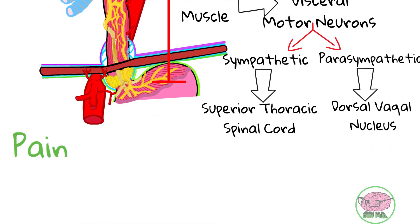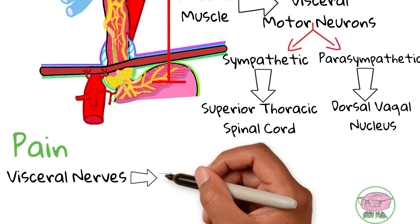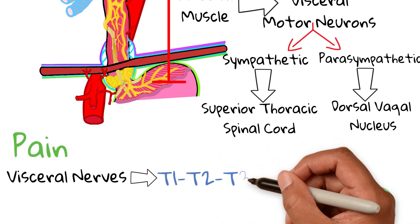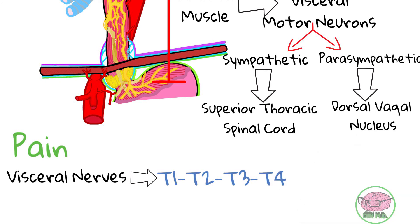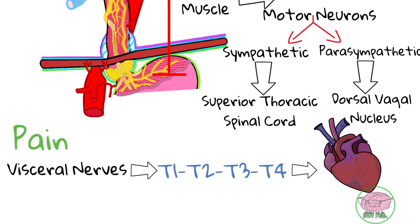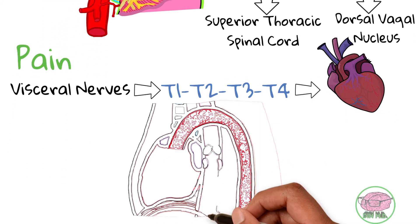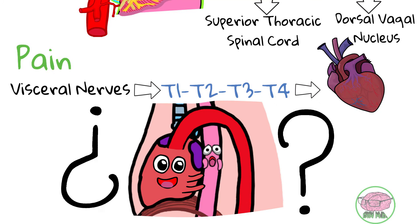Pain from the esophagus is transported via visceral nerves that travel along the sympathetic fibers. These nerves arrive to the spinal cord at the segments T1, T2, T3 and T4. These segments of the spinal cord are also the ones that receive pain signals from the heart. Therefore, it is often difficult to distinguish esophageal pain from cardiac pain.